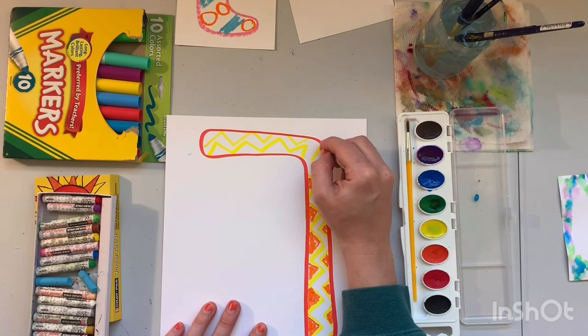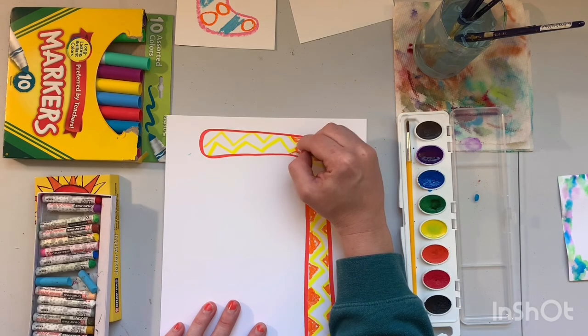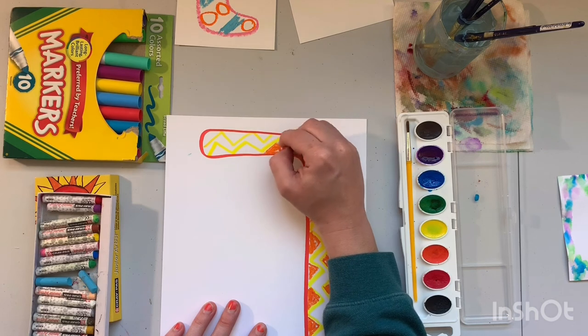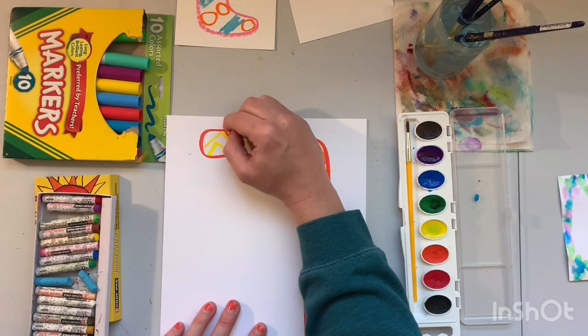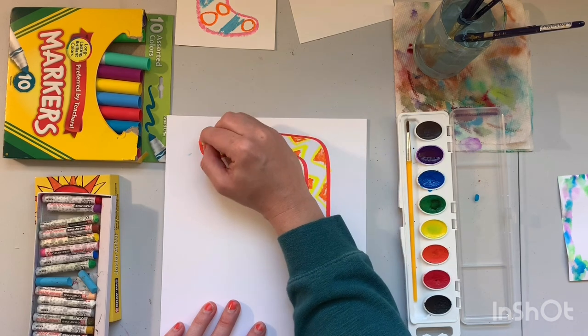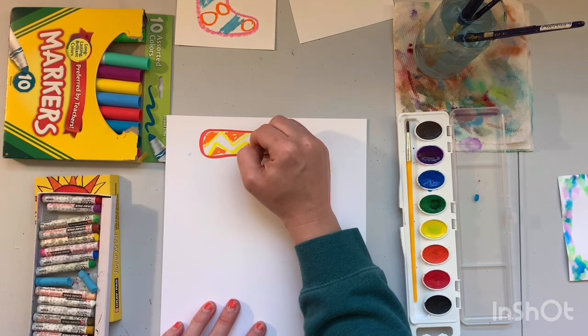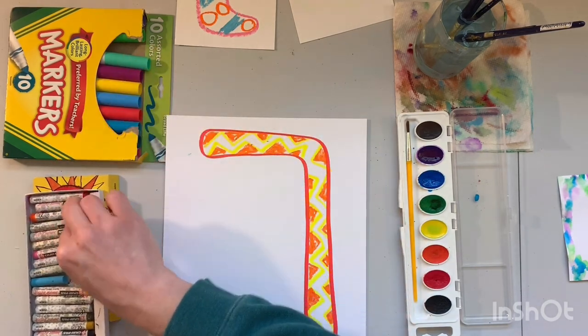So I think it would be cool if you guys challenged yourself to see how many different ways you can draw your mark that you made. Just like Vashti, she just drew a dot but she made all kinds of different artworks because of that dot. And all of them were dots. They were just big and little and really colorful and painted and drawn all over the place.